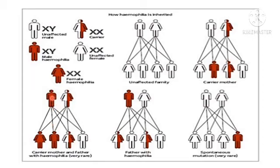Suppose the father is affected and the mother is also a carrier. Then two children will be affected, one child will be a carrier, and one child will be normal. So 75% of the children are affected and only 25% are normal.